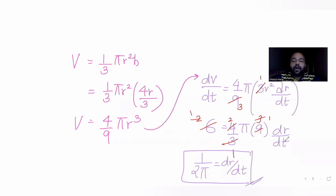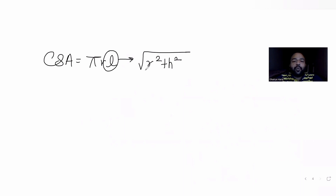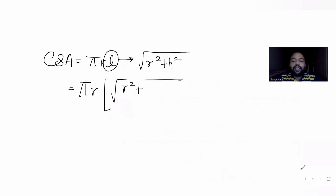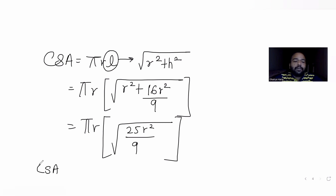The curved surface area of the cone is πrl, where l is the slant height given by √(r² + h²). Since h equals (4/3)r, we have h² equals (16/9)r². So the curved surface area becomes π r times √(r² + (16/9)r²), which equals πr times √((9r² + 16r²)/9), giving πr times √(25r²/9).